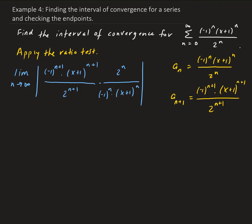Let's simplify. We have (-1)^(n+1) up here, which is (-1)^n times (-1). So (-1)^n will cancel out with (-1)^n in the denominator, leaving us with a (-1) on top — but that goes away when we take the absolute value. Then we're left with 2^n over 2^(n+1).